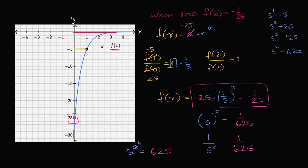So we can now say that f of four is equal to negative one twenty-fifth. You can verify that: one-fifth to the fourth power is one over six twenty-five, and negative twenty-five over positive six twenty-five is negative one twenty-fifth. So hopefully that clears things up a little bit.